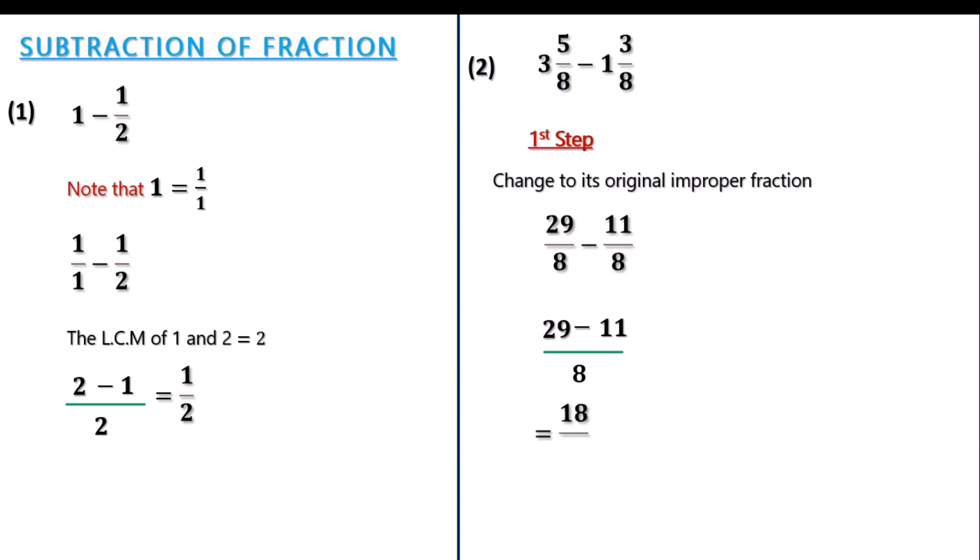So 29 minus 11 will give us 18 divided by 8. This is the answer to the question asked above. That means 3 whole number 5 over 8 minus 1 whole number 3 over 8 will yield 18 over 8.